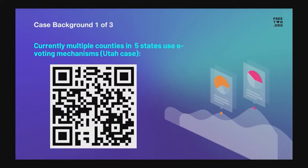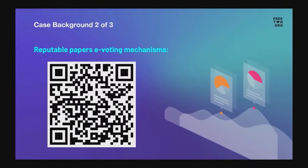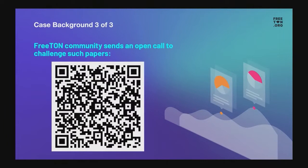We're not the only ones doing e-voting. There is related background. This background covers about five counties in several states — for example, Utah — where an attempt to legislate e-voting happened back in 2019, and it wasn't a huge success. Thanks to this, MIT released a paper criticizing e-voting, which in my opinion is a complete failure. Such a paper induced a massive amount of challenge attempts, including from the Freetown community — more than 40 attempts actually. Most of them were pretty successful, but unfortunately purely theoretical.